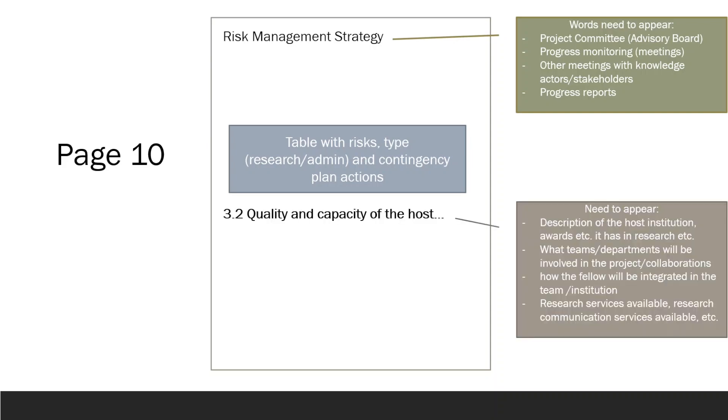In the final section, 3.2, quality and capacity of the host institutions and participating organizations, including hosting arrangements, provide a description of the hosting institution, its awards, and its standing. Discuss the departments and teams that will play a key role in advancing the project, as well as how the researcher will be integrated into the team and institution. Highlight the services available to the researcher, such as research support, research communication, and knowledge dissemination.